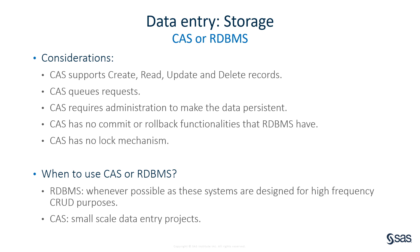When you do data entry, you need to store your data somewhere. The CAS server supports create, read, update, and delete of records. It queues all requests, so you can execute multiple requests in parallel. CAS also requires a bit more administration compared to an RDBMS, in the sense that you are writing data into memory. If you want the data to be persisted across CAS sessions — meaning when you restart the CAS server — you need to use PROC CASUTIL or PROC CAS to save the data on disk so it can be reloaded when the CAS server restarts. CAS does not provide commit or rollback functionalities like an RDBMS, and has no lock mechanism at the table or row level.